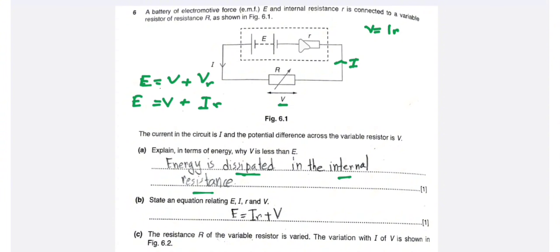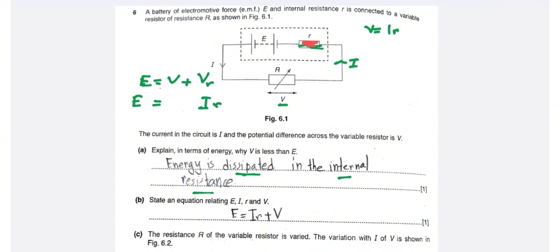Since energy is dissipated in the internal resistance, the voltage V across the variable resistor is obviously less than the EMF E. Therefore V is less than E.